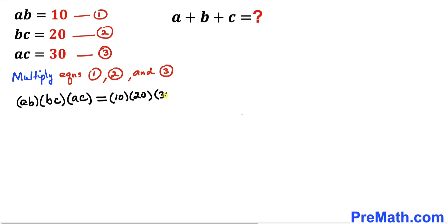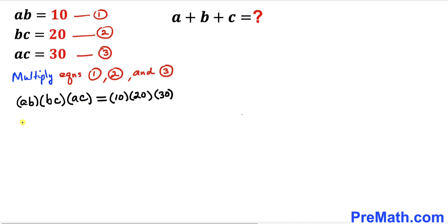Multiplying out the left hand side: a times a times a gives a squared, b times b gives b squared, and c times c gives c squared. So on the left hand side we have a squared times b squared times c squared, equal to 10 times 20 times 30, which is 6,000.